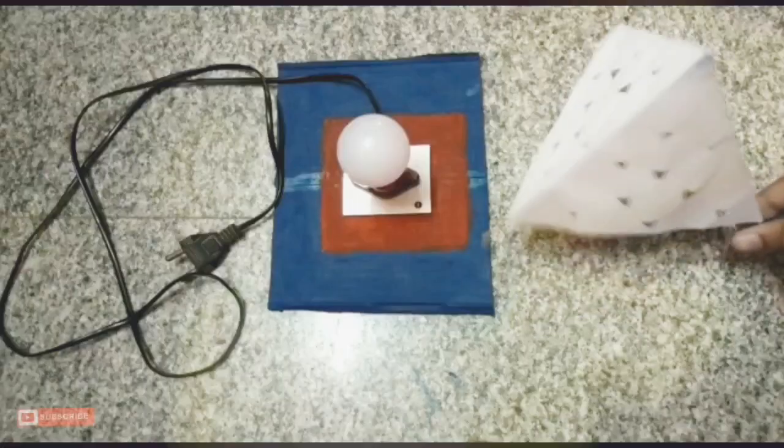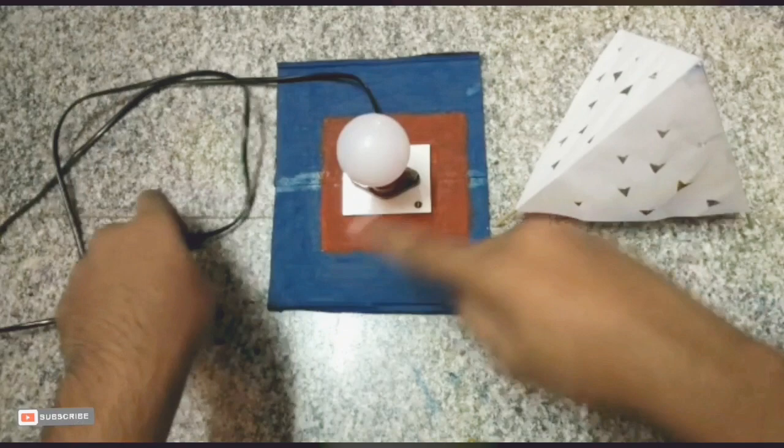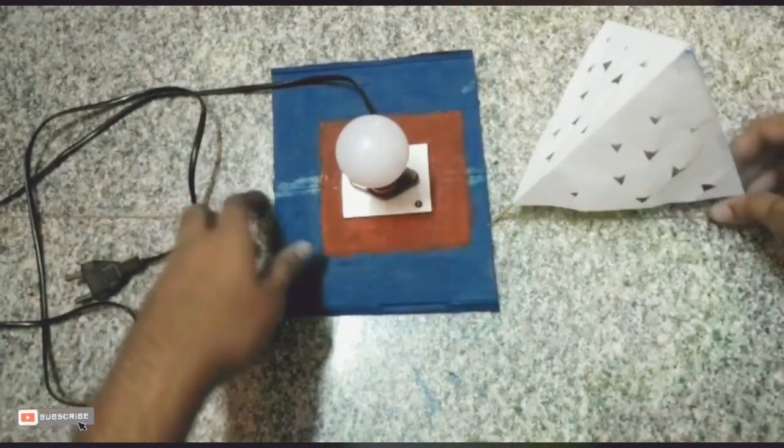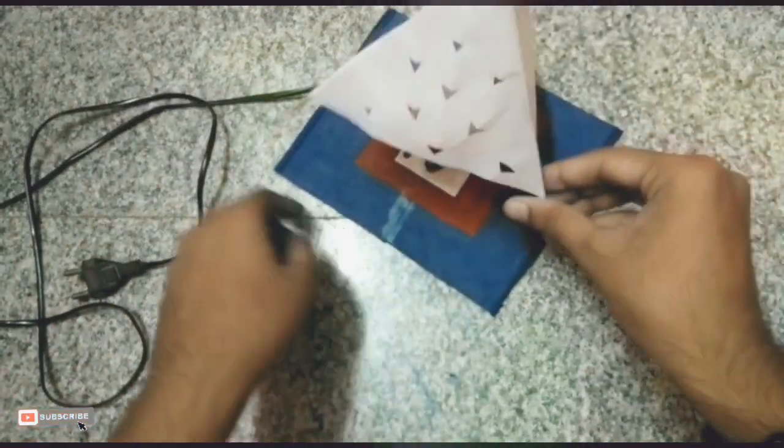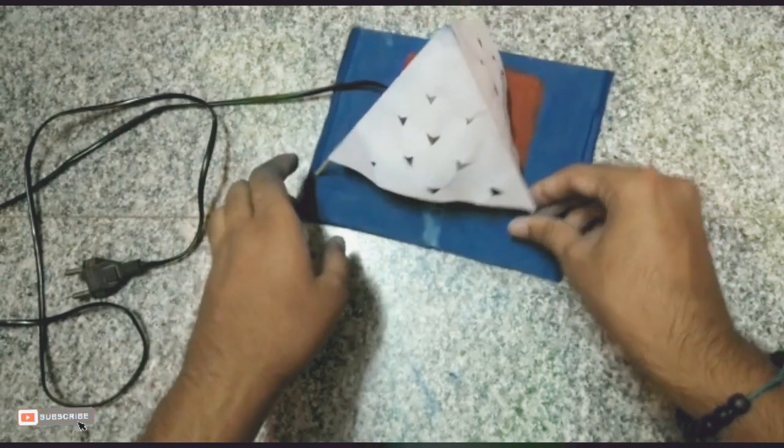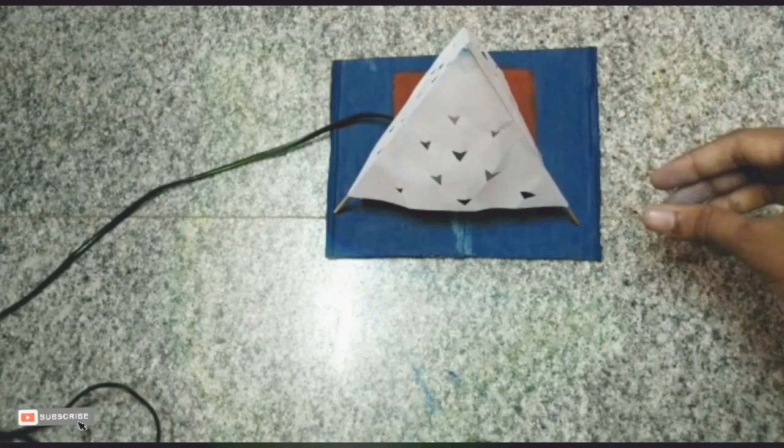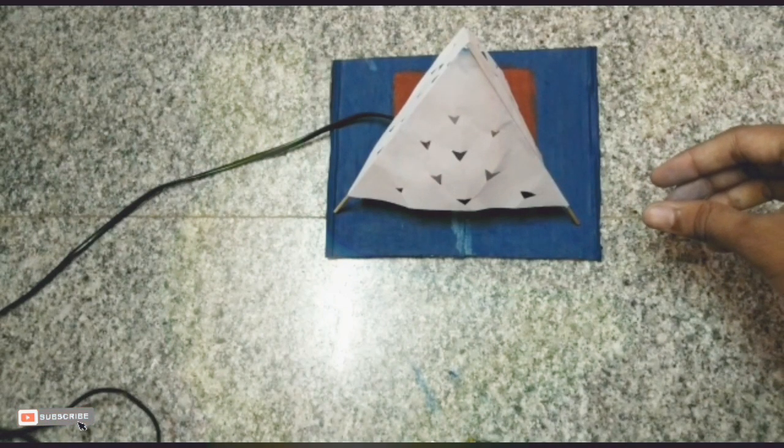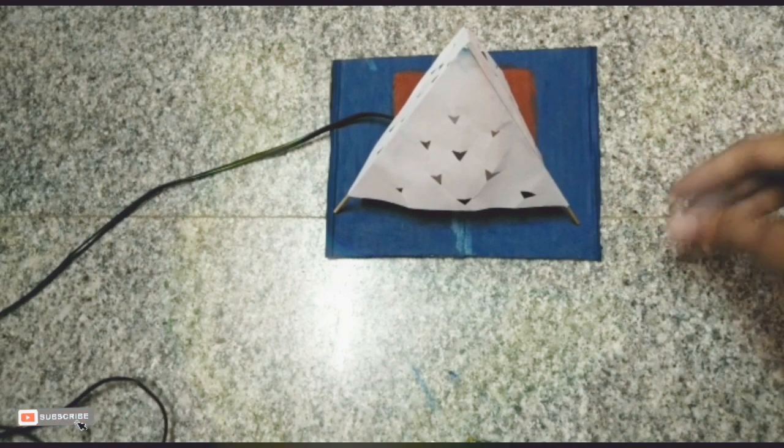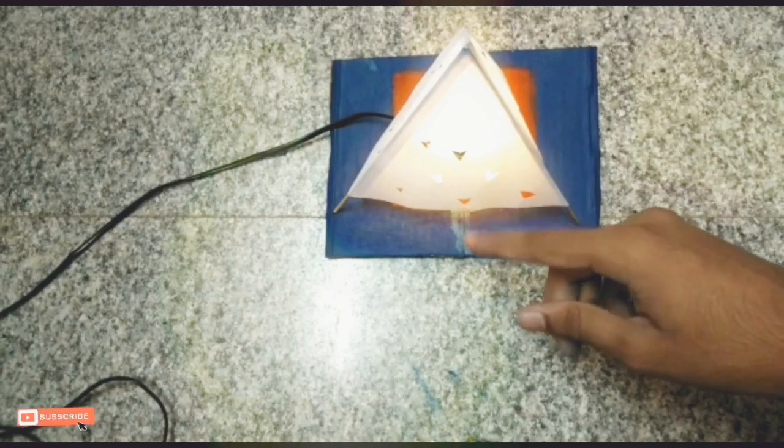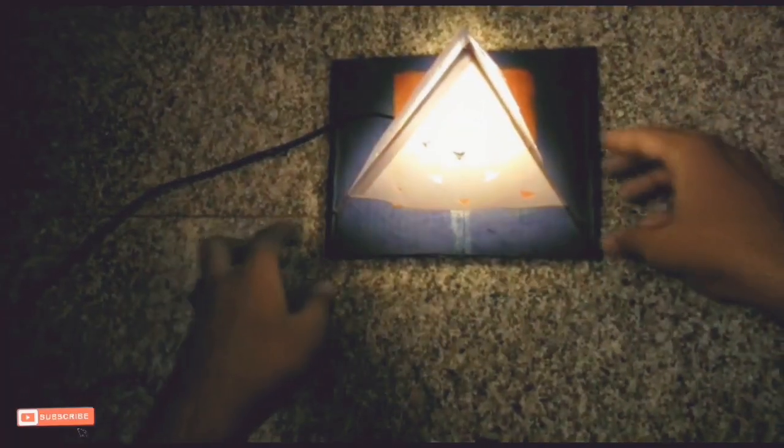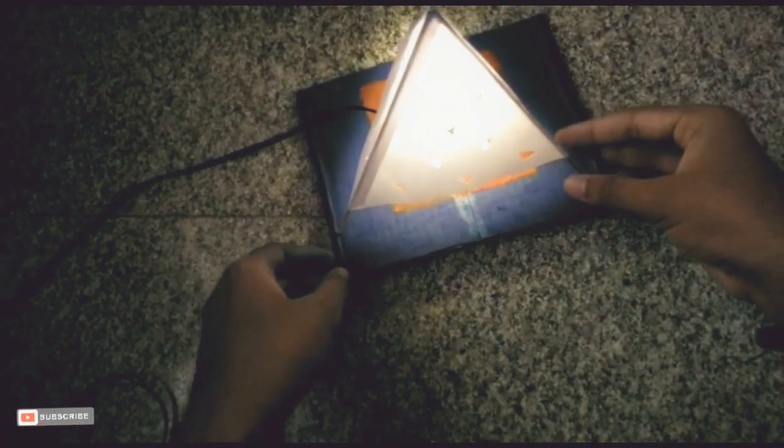After painting, then place the three dimensional triangle on it. It seems to be very beautiful and perfect. Now plug it. Let's turn on the switch. It seems to be glowing and it's very beautiful. It seems to be beautiful to see at night.